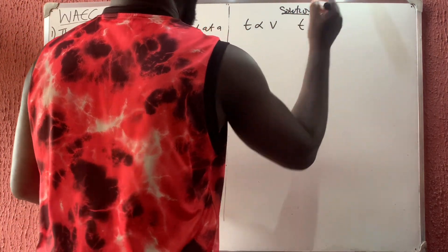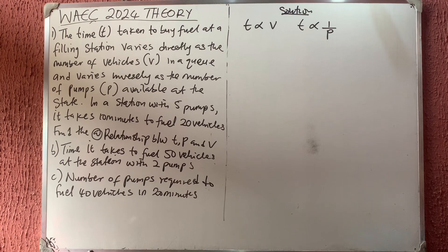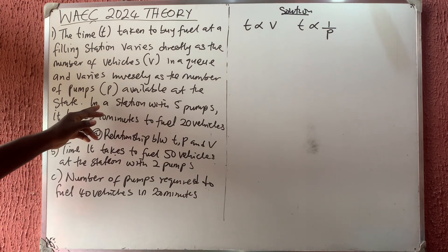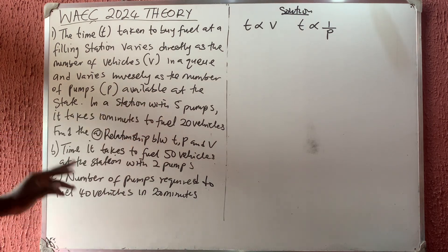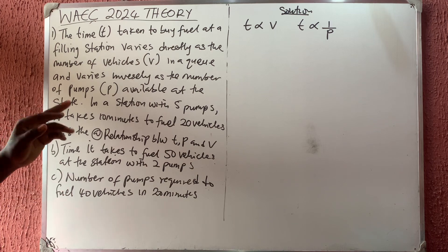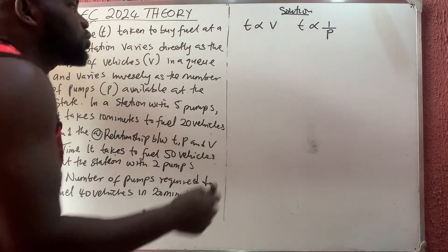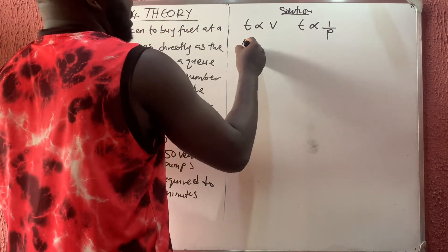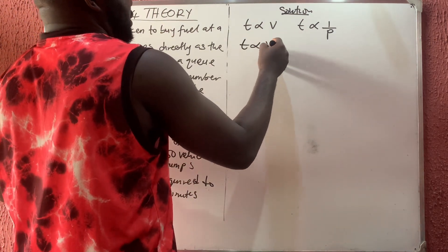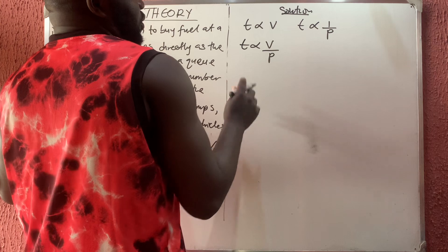It says in a station with five pumps it takes 10 minutes to fuel 20 vehicles. For part a, we should find the relation. To combine these two, I'm going to have that t varies directly as v but inversely as p.